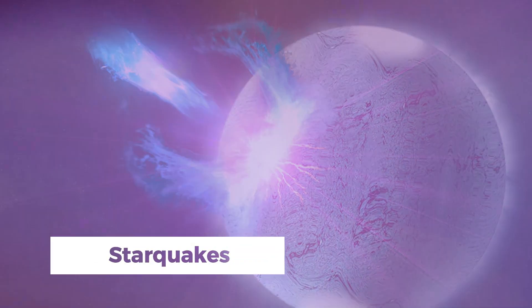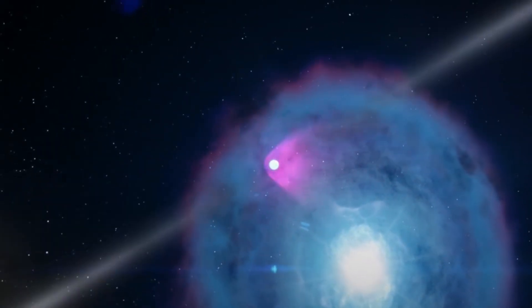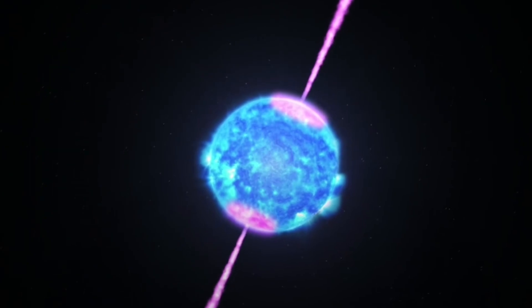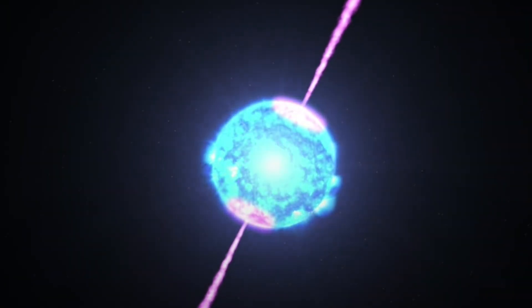The surface of a magnetar can experience fractures, leading to phenomena known as starquakes. These starquakes release an immense amount of energy, occasionally resulting in the emission of powerful x-rays and gamma rays which are detectable from our planet.